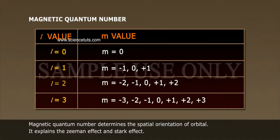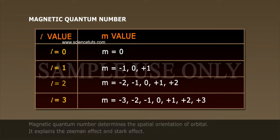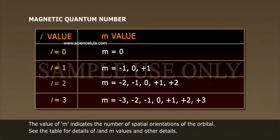Magnetic quantum number determines the spatial orientation of orbital. It explains the Zeeman effect and Stark effect. The value of m indicates the number of spatial orientations of the orbital.